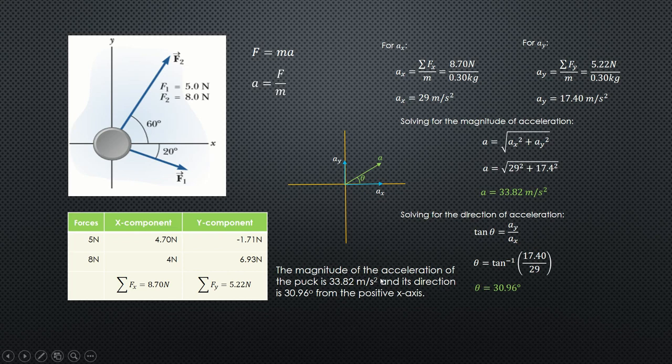Therefore, the magnitude of the acceleration of the puck is 33.82 meters per second squared, and its direction is 30.96 degrees from the positive x-axis. All right, thank you.